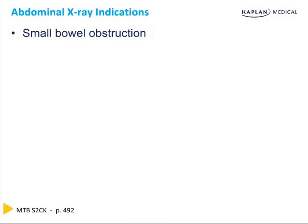While chest X-rays are perhaps the single most important imaging modality, and thus the one you are most likely to see on your exam, the indications for an abdominal X-ray are actually very narrow. On your Step 2 CK exam, the only reason you should order an abdominal X-ray is to evaluate for a small bowel obstruction in a patient who presents with nausea and vomiting and is found on exam to have a distended abdomen and diffuse abdominal pain. Along with making the broad diagnosis of small bowel obstruction, abdominal X-rays can also help distinguish between a mechanical obstruction and an ileus, in which the intestinal lumen is patent but the bowel wall is not peristalsing, which can occur after surgery or secondary to opioid use.